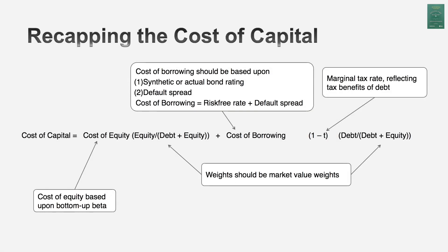To summarize: when you estimate the cost of capital, you first estimate the cost of each element — the cost of equity, the cost of debt, and if you have preferred stock, the cost of preferred stock. Then you attach weights to those numbers, and those weights should generally be market value numbers — market value of equity, market value of debt, and market value of preferred stock — just make sure your weights add up to one. At the end of the process you will have a composite cost of financing your firm — a cost of capital — that you will use as your discount rate when discounting cash flows to the entire business. You might choose to discount cash flows to equity instead, in which case you can use the cost of equity, but having all the elements in place gives you a much better estimate of value for the business.